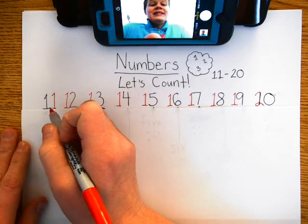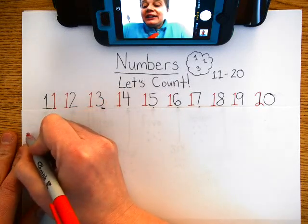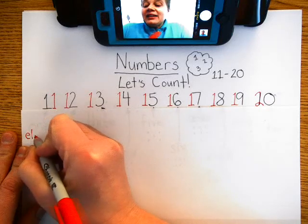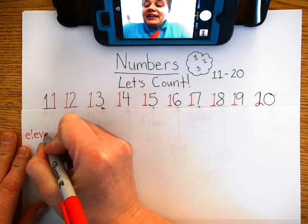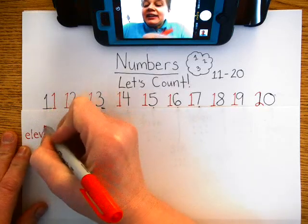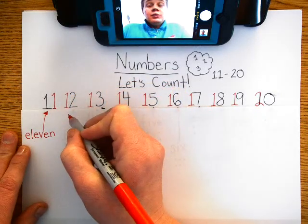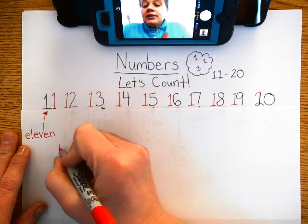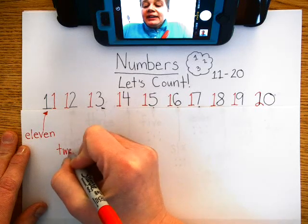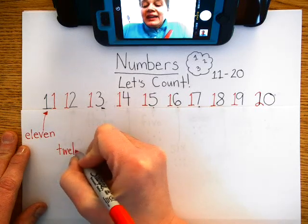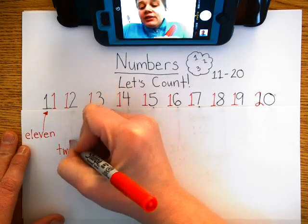Let's spell the numbers. 11, E, L, E, V, E, N, 11. 12, T, W, E, L, V, E, 12.